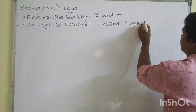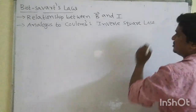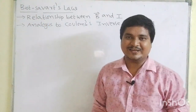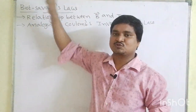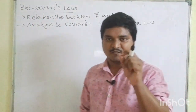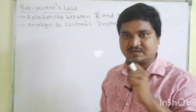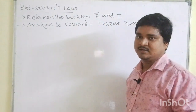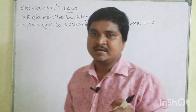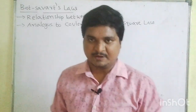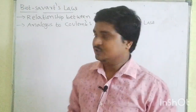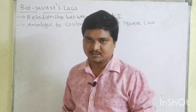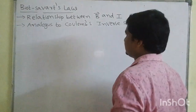Coulomb's inverse square law is the electrostatics law, and for the magnetic field, the corresponding law is Biot-Savart law. We will get one formula which shows the relation between magnetic field induction and also current. Using that formula, we will do a number of numerical problems.